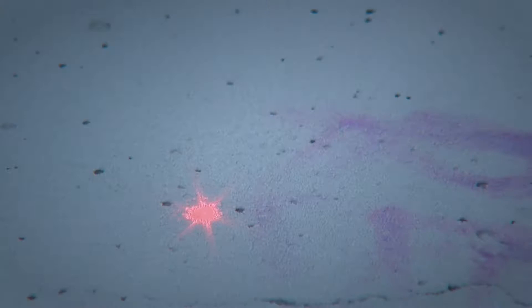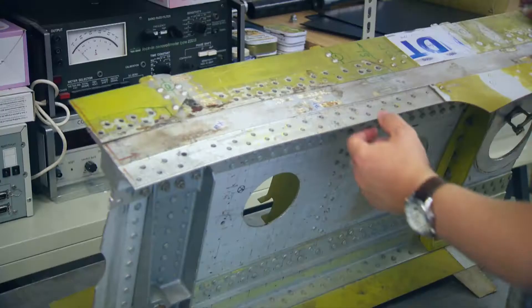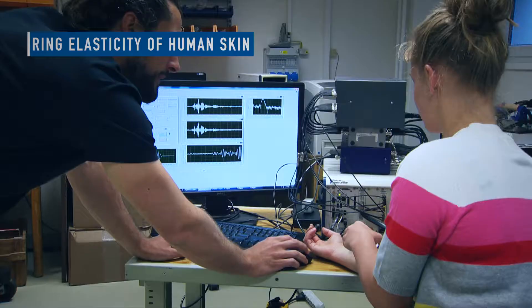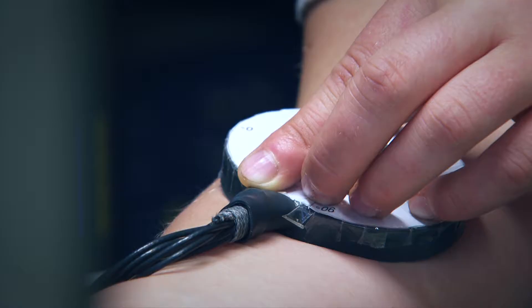Non-destructive testing allows us to diagnose hidden defects in materials and structures without damaging or dismantling the tested objects. Our methods can also be used to measure the elasticity of human skin. A special probe will allow surgeons to determine the optimal direction of incision during surgery.